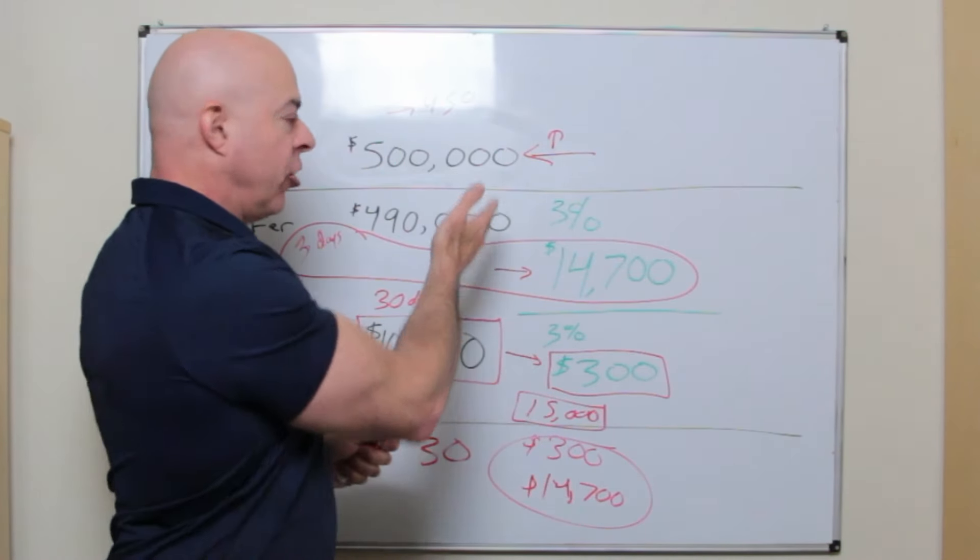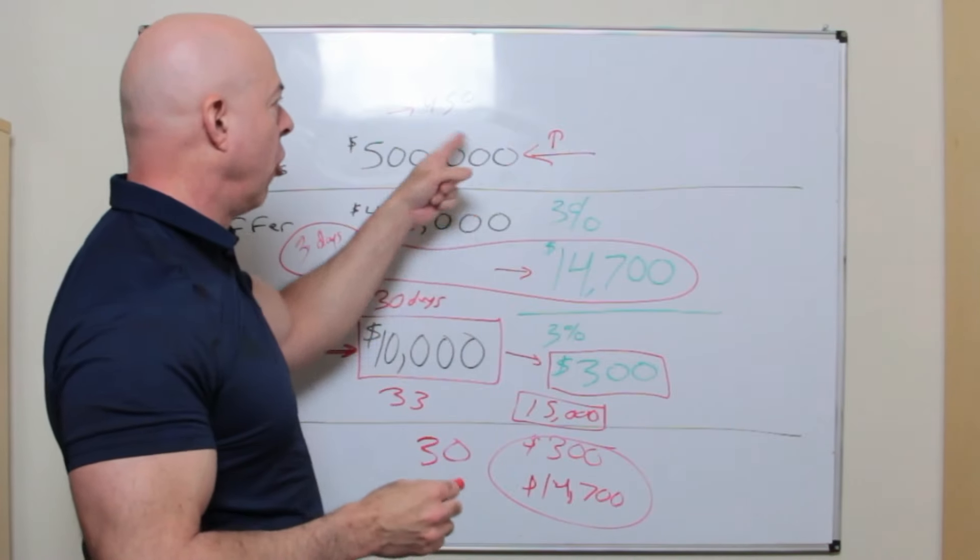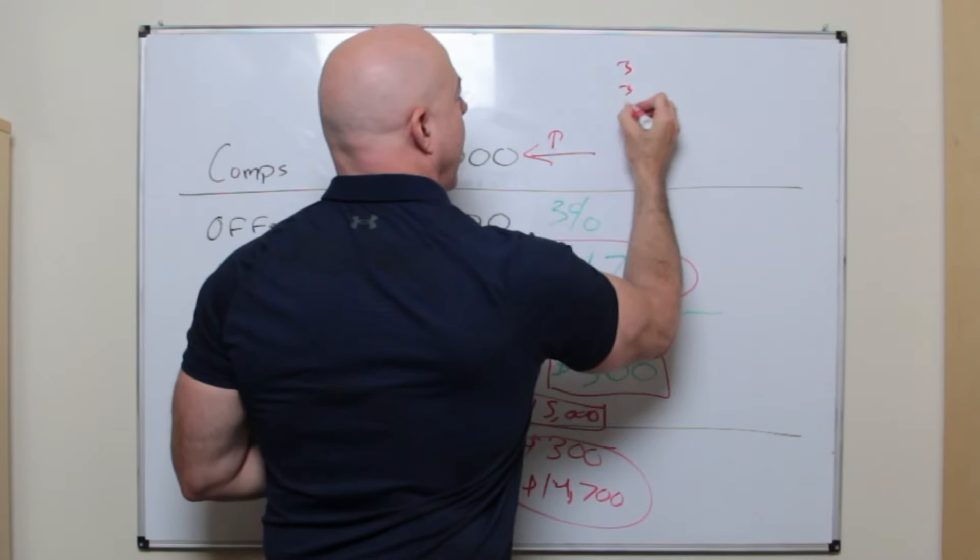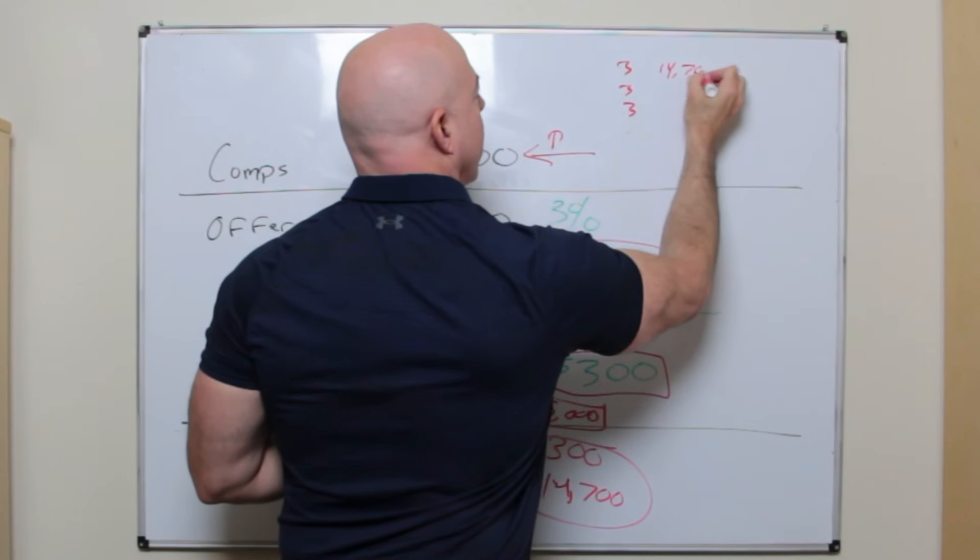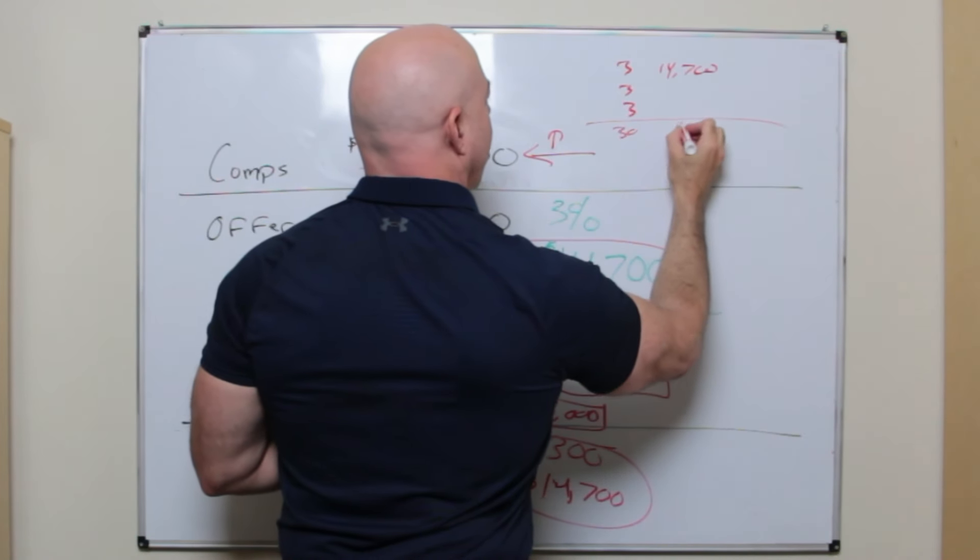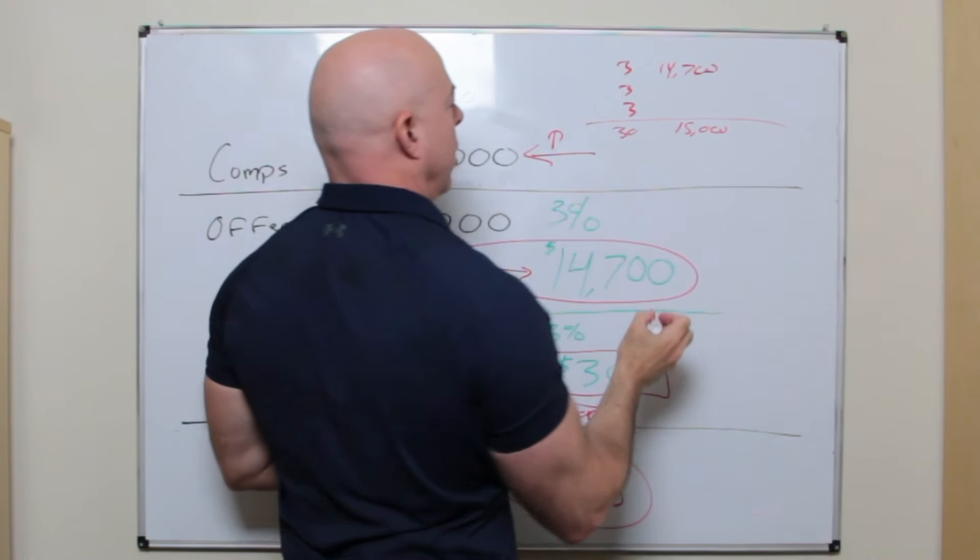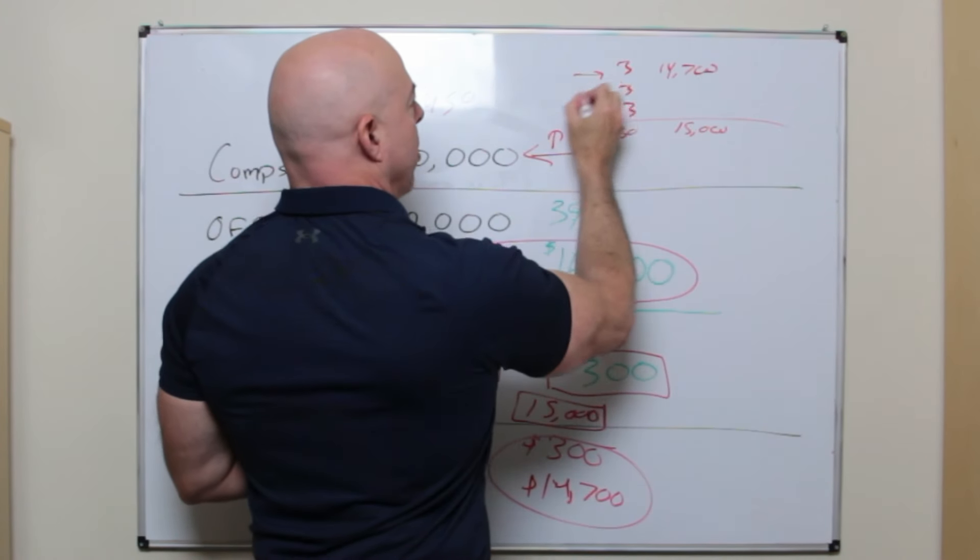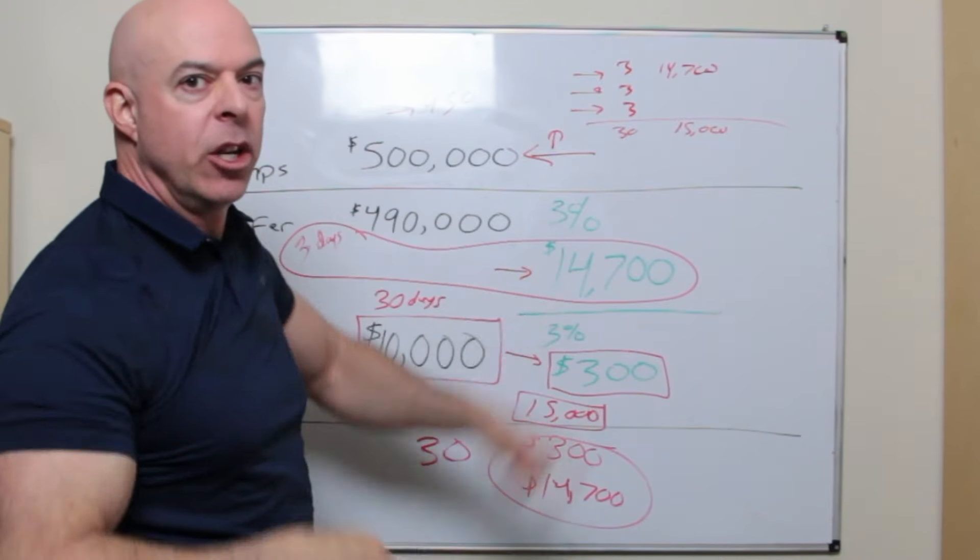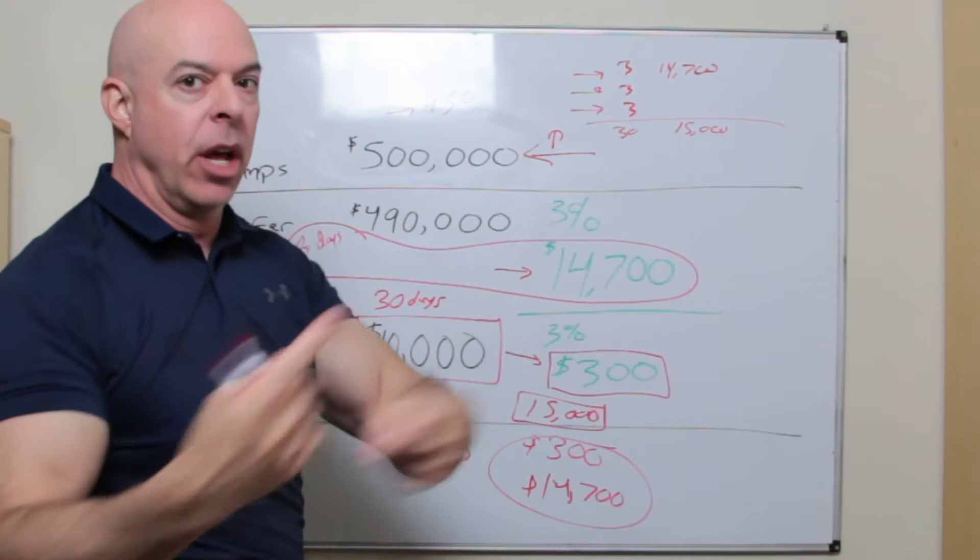Because a realtor should say, well, gosh, I want these things to all sell in three days because then I can make every three days my $14,700. But what if I sold at market every 30 days? I'd make $15,000. Okay. This isn't going to happen. They're not going to sell house every three days, but you get the point. If you can quickly sell under market, you do it and you move on to the next one. That's what realtors do.